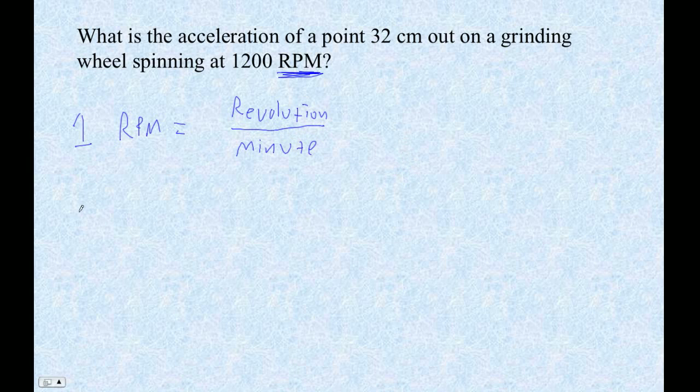So the simplest way to do this is to actually just figure out what the period is. The period is actually 60 seconds, that is a minute, divided by, in this case, it's 1200 RPM, 1200 rev per minute. And then if you notice, per minute goes the way of the bison, you get seconds per revolution. So this ends up being 0.05 seconds per revolution, which is exactly what the period is.